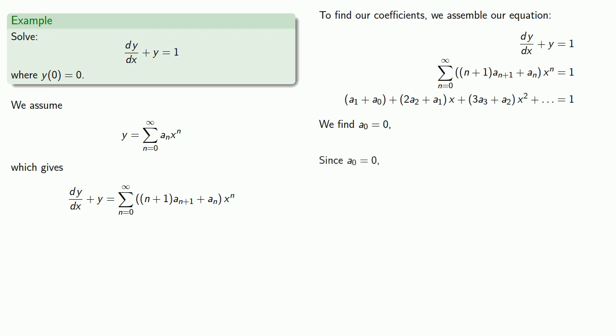Since a0 is equal to 0, and our left-hand side and our right-hand side have to be the same, that means our constant terms have to be the same. On the right, we have 1. On the left, our constant term is a1 plus a0, and so these must be equal. Solving tells us that a1 is equal to 1.